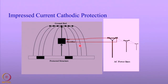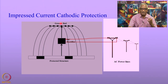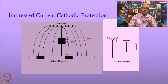Next is rectifier selection. The impressed current cathodic protection of engineering structures involves the use of a rectifier. The capacity of this rectifier depends upon the current required to protect these structures and the resistance offered by the ground bed — that is, the anodes, the cables, and the pipelines. Today we will see a problem related to the anode ground bed.